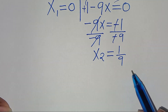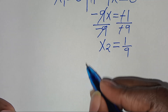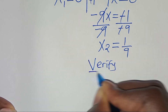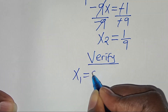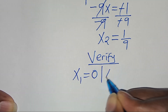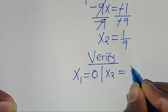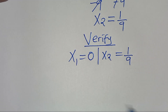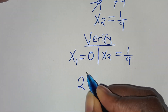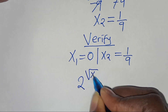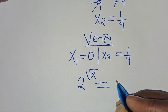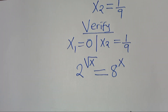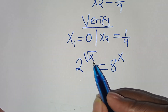Let's verify that x₁ equals 0 and x₂ equals 1 over 9 both satisfy the equation. Recall the original equation: 2 to the power of square root of x equals 8 to the power of x. Starting with x₁ equals 0.